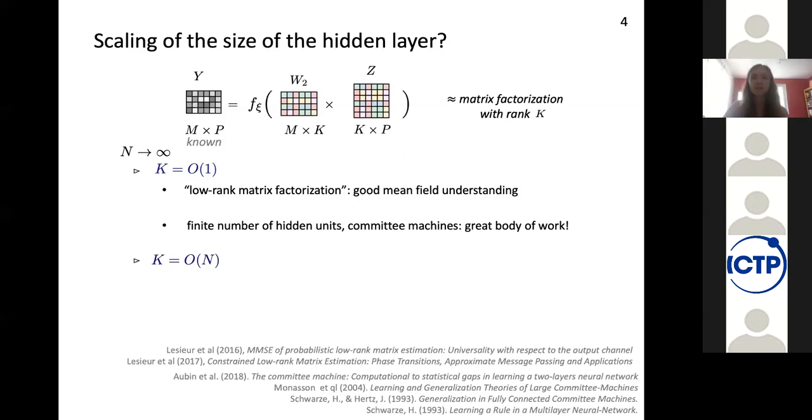But now if we think of deep neural networks in practice, how do they look like? They look more like all the layers have the same kind of number of units and there is not an infinitely large input layer and then only a few hidden units. So can we tackle the case where K is actually scaling like N? Well, in this case, we are in the high rank matrix factorization regime. And for this, we don't have to this day a good mean field understanding of this inference problem.